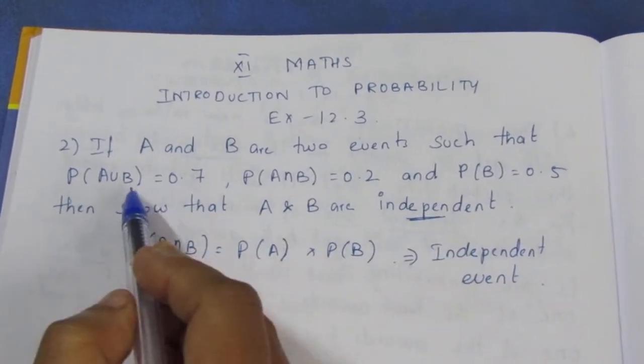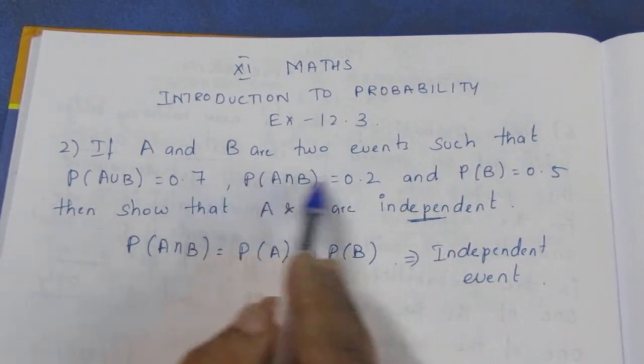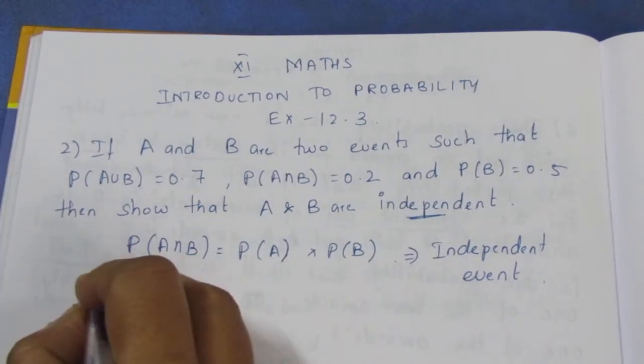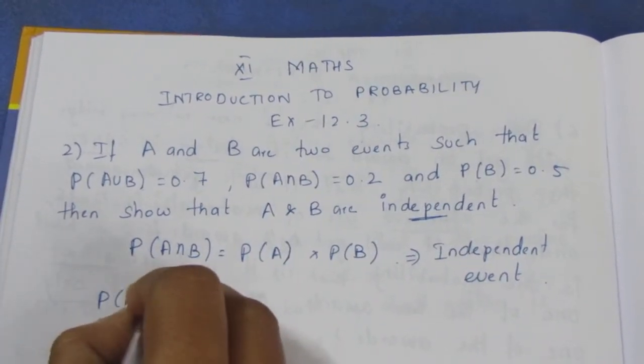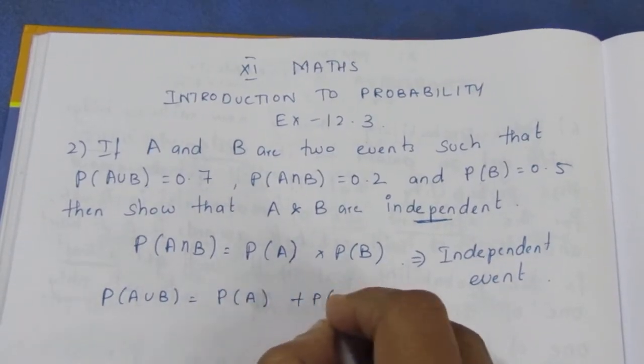If we have A union B, A intersection B, and P of B, we can use the union formula: P(A∪B) = P(A) + P(B) - P(A∩B).